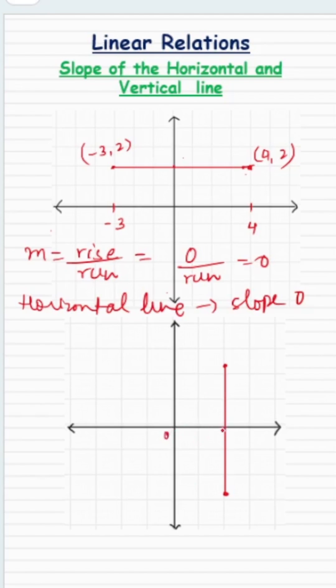So if this is 0 and this is 2, on every point on this line, the x value remains to be 2. It does not change. That means the run is not changing.